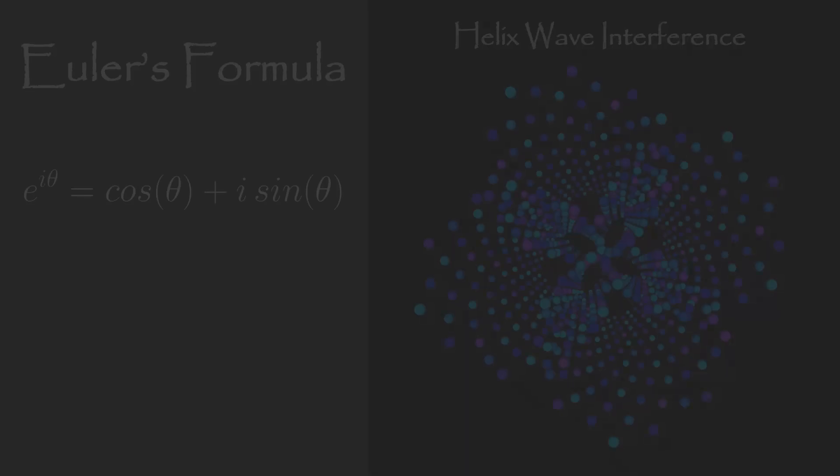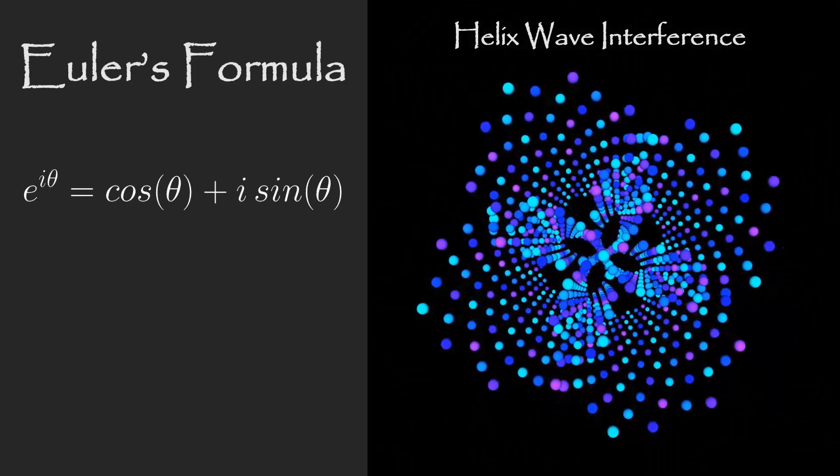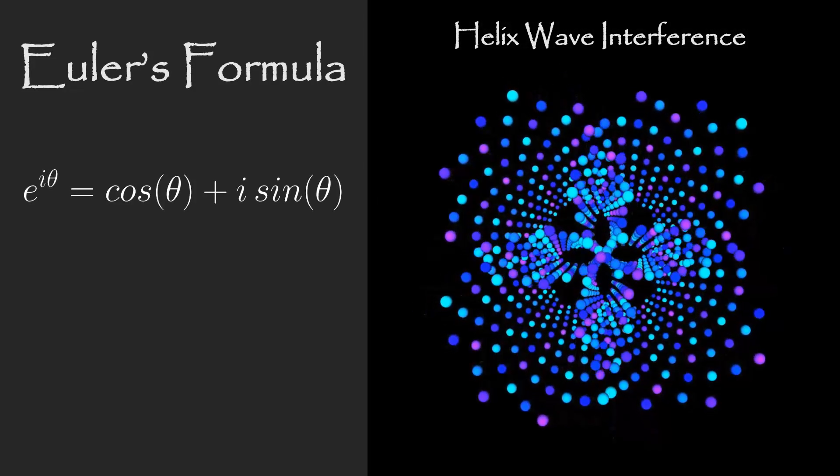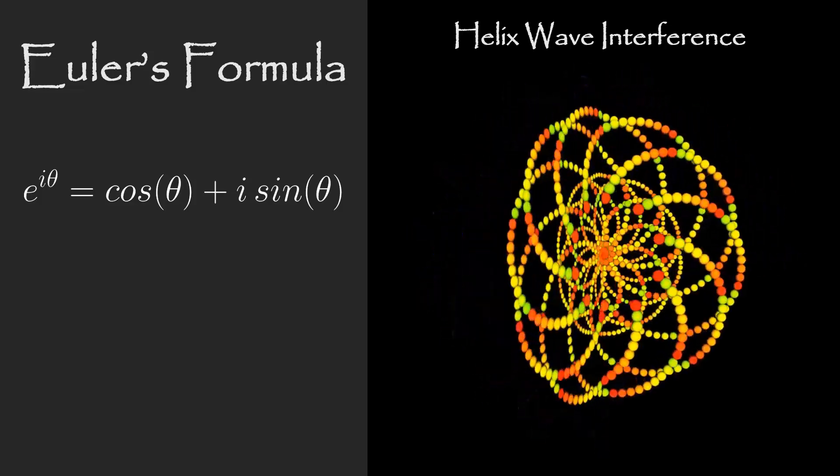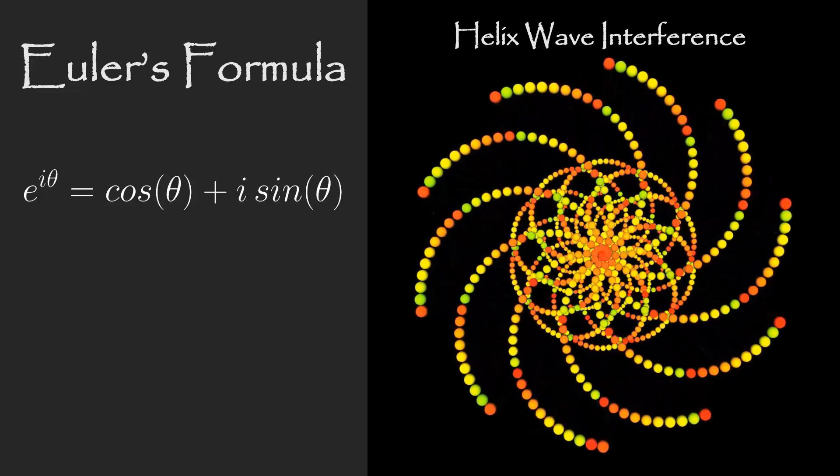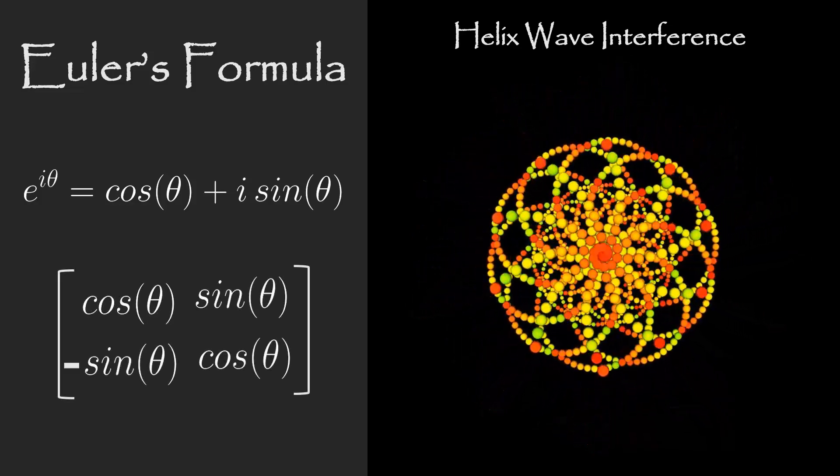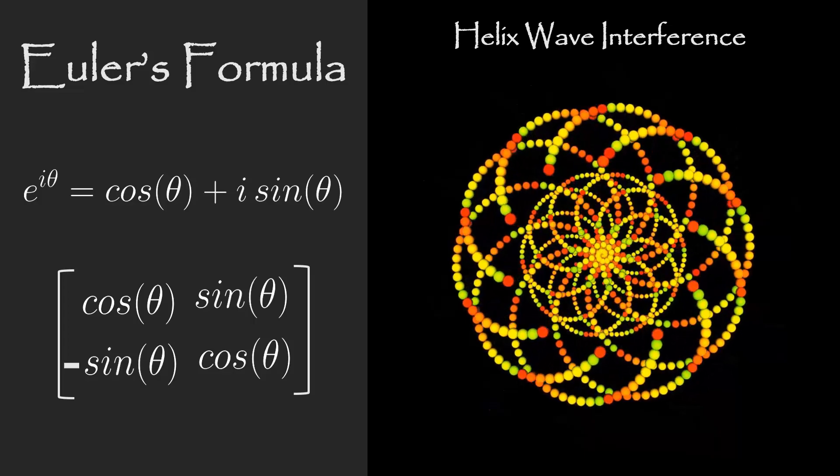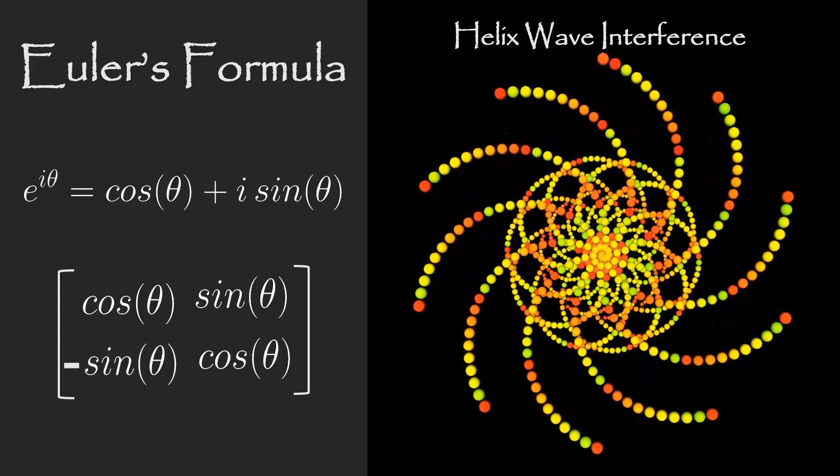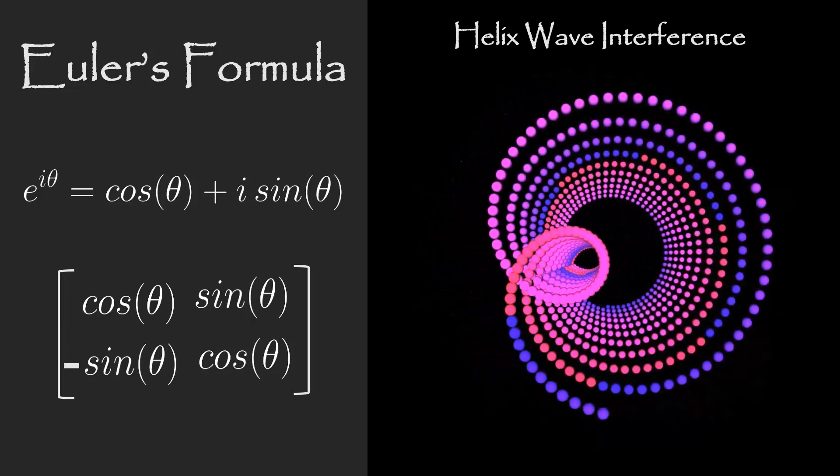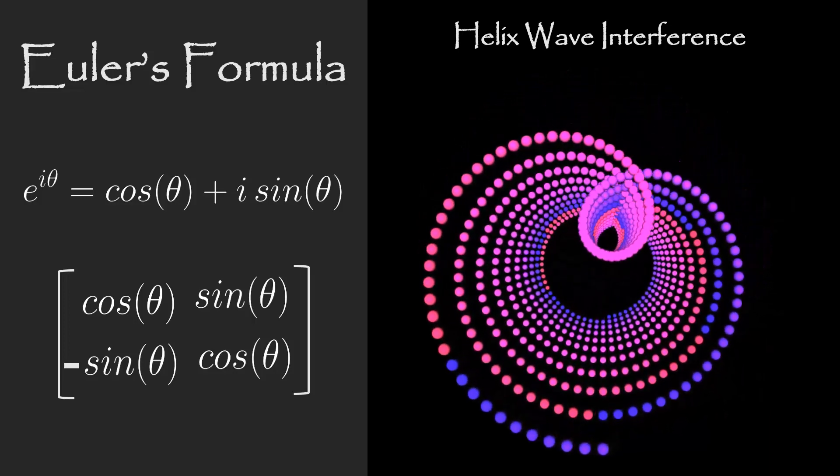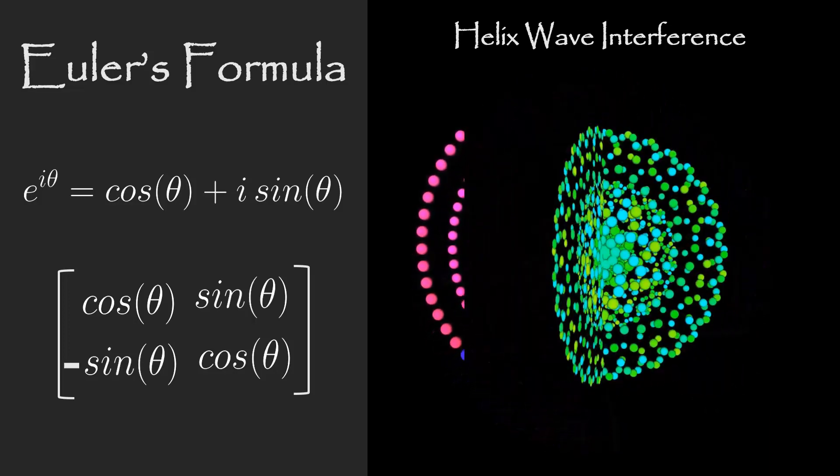Next, we are going to talk about Euler's formula. The algebraic expression for Euler's formula looks like this, where the cosine term is the real component and the sine term is the imaginary component. The two-by-two matrix implementation looks like this. Here, you can see that the real component, the cosine term, is on the forward diagonal and has the same sense. And the imaginary component, the sine term, is on the backward diagonal and has the opposite sense.